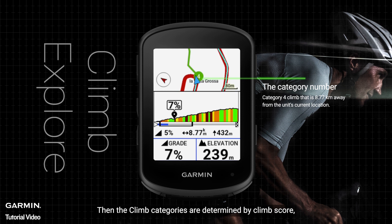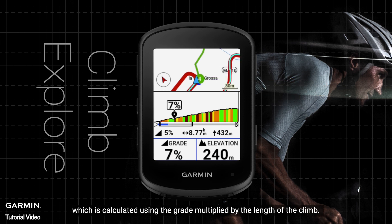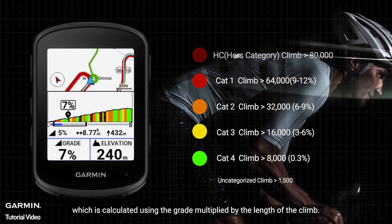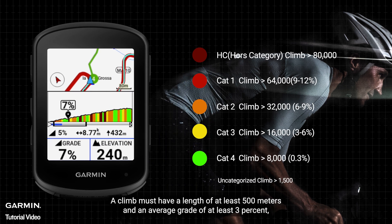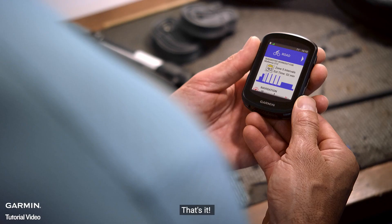The climb categories are determined by the climb score, which is calculated using the grade multiplied by the length of the climb. A climb must have a length of at least 500 meters and an average grade of at least 3%, or a climb score of 1500, to be considered a climb.